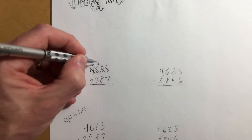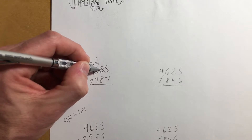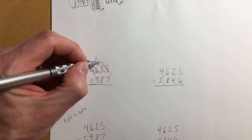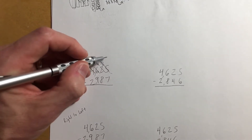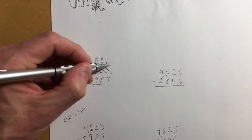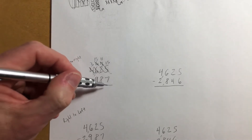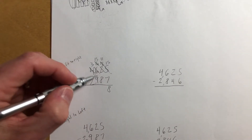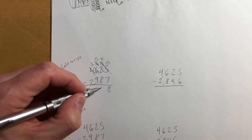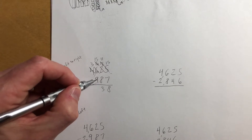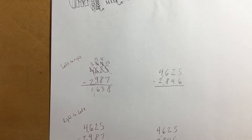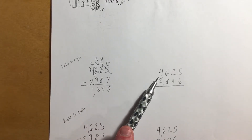Then I have to decompose the sixteen hundreds, so I only have 15, which turns this into twelve tens. But then I have to decompose one of those, so I only have 11, and that comes all the way over here so I have 15 ones. So I have 15 minus 7, which is 8. I have 11 minus 8, which is 3. Fifteen minus 9 is 6. Three minus 2 is 1. Hopefully that makes sense.